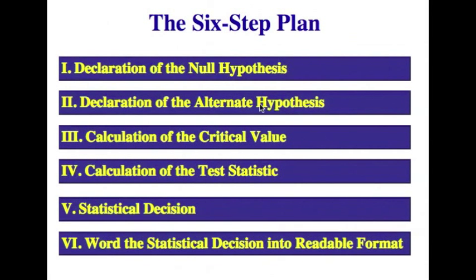The alternate hypothesis is HA. We examined in our other videos that HA can be three different possibilities. Just for instance, for mu, if the null hypothesis is H naught mu equals seven, HA can be mu is not equal to seven, mu is less than seven, or mu is greater than seven. So you declare the null hypothesis as the claim. The alternate hypothesis is the opposite of the claim.